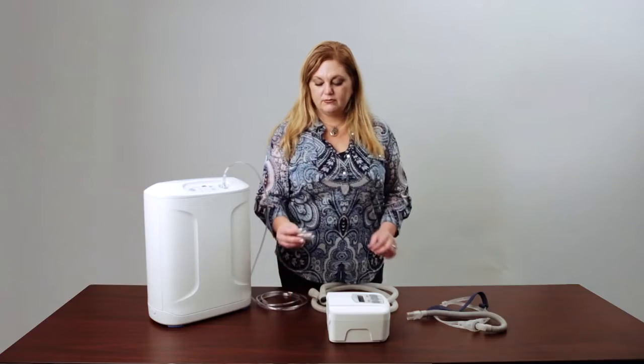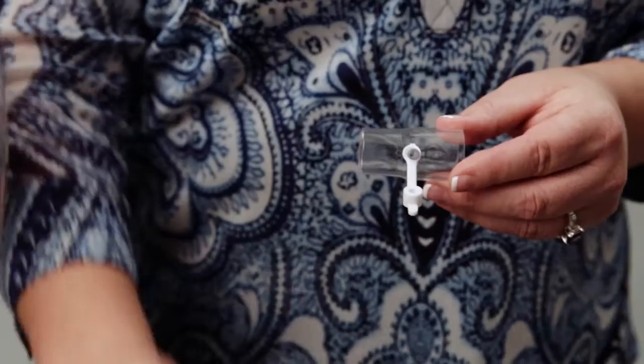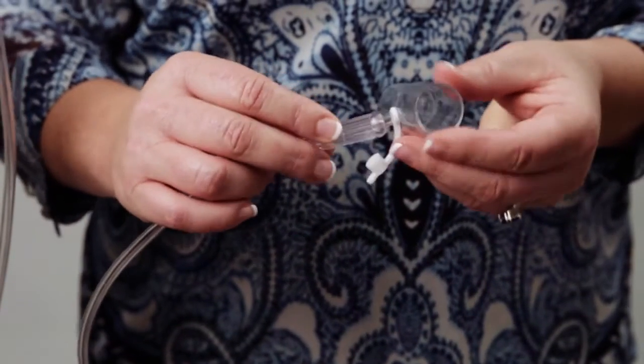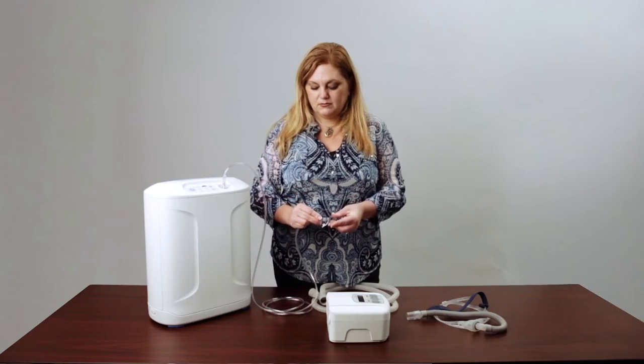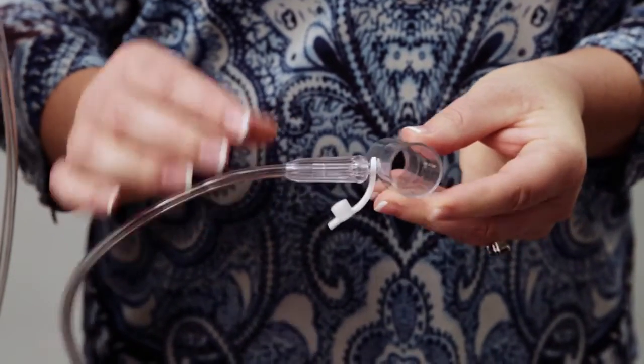With the oxygen turned off, attach the oxygen bleed-in adapter to the oxygen supply tubing. The oxygen supply tubing connects to a small opening at the base of the T-shaped adapter.